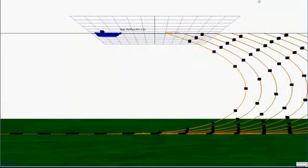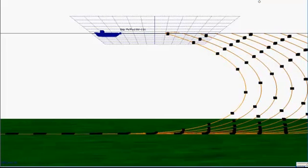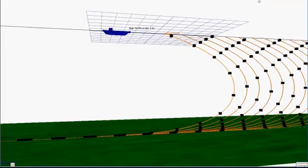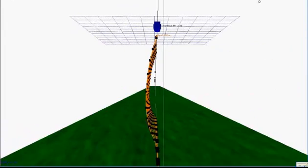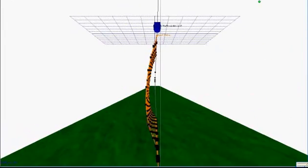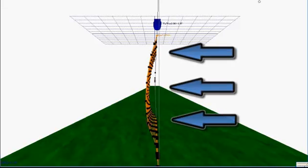Strong cross currents add complexity to a cable lay by introducing the risk of the cable dragging laterally on the seabed even if the ship is directly in line with the cable path. In this head-on view, you can see that half a knot of lateral current causes the cable to drift to your left and drag on the seabed, potentially causing damage to the cable.